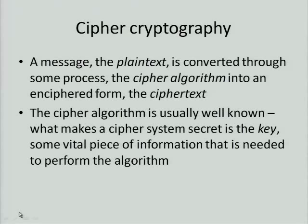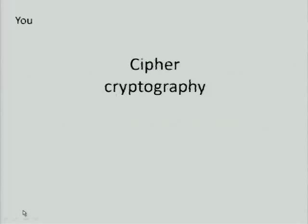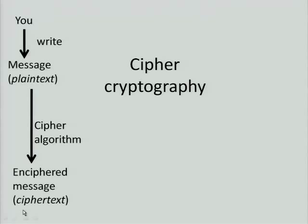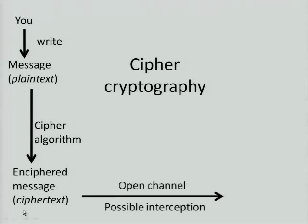Here's a little diagram. There's you in the top left-hand corner. One, you write the message — that's the plain text. The cipher algorithm is applied to the plain text, making an enciphered message we call the cipher text. This goes over some open channel, meaning it may be intercepted along the way. It arrives at the other end, still an enciphered message. The cipher algorithm is applied again in reverse. You end up with the plain text, which can be read by your generals.